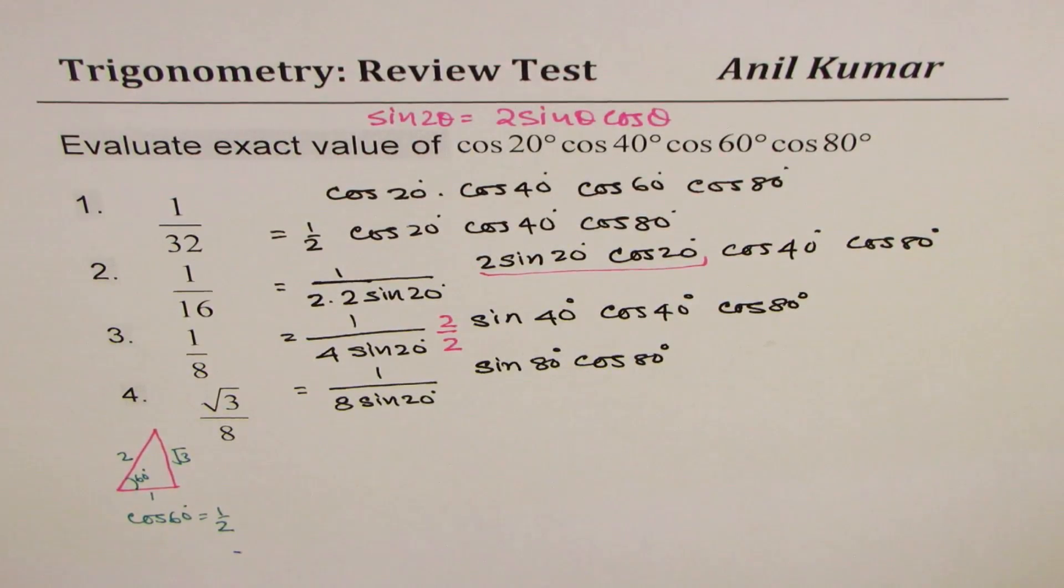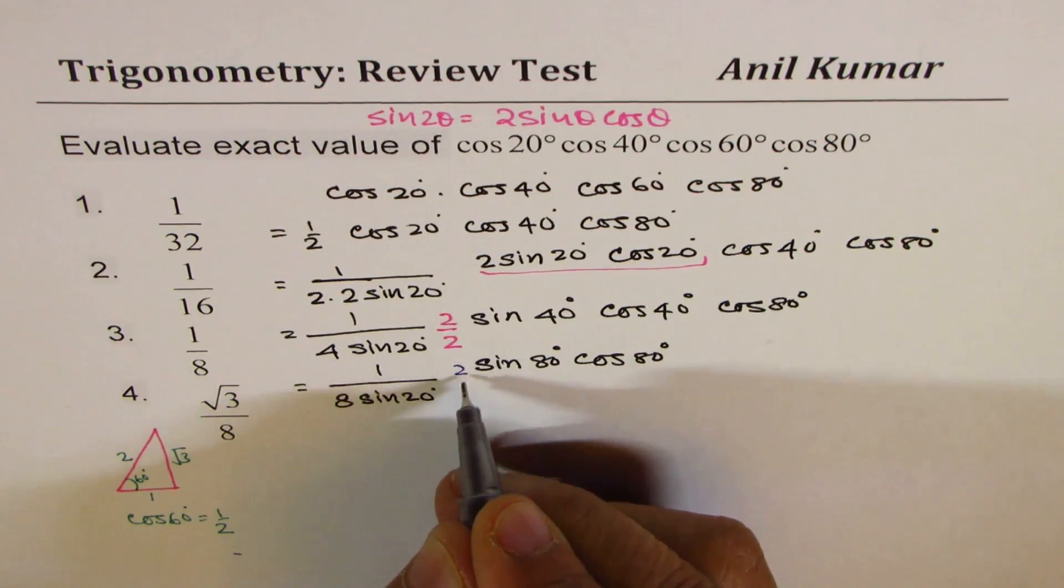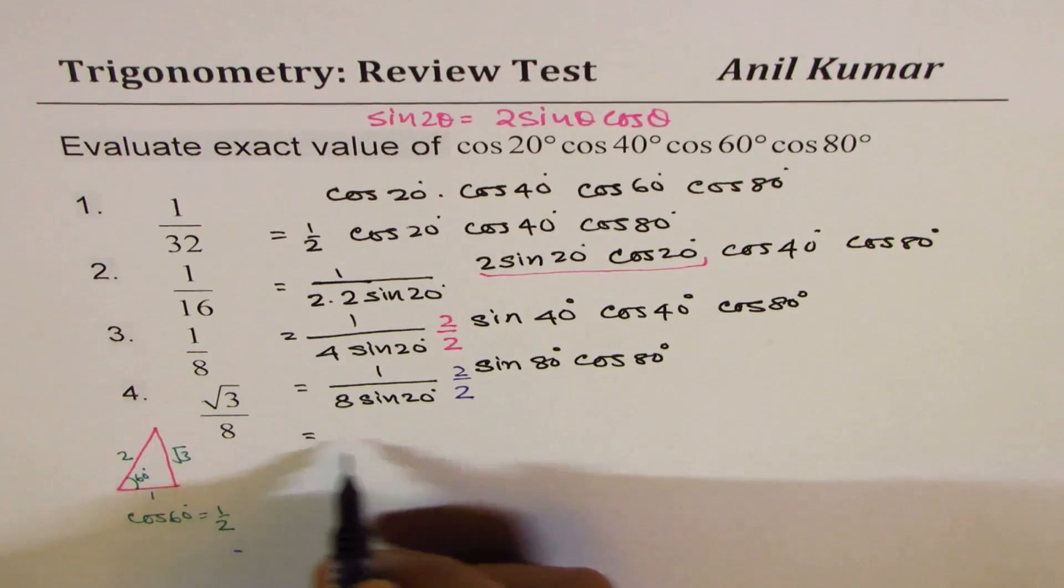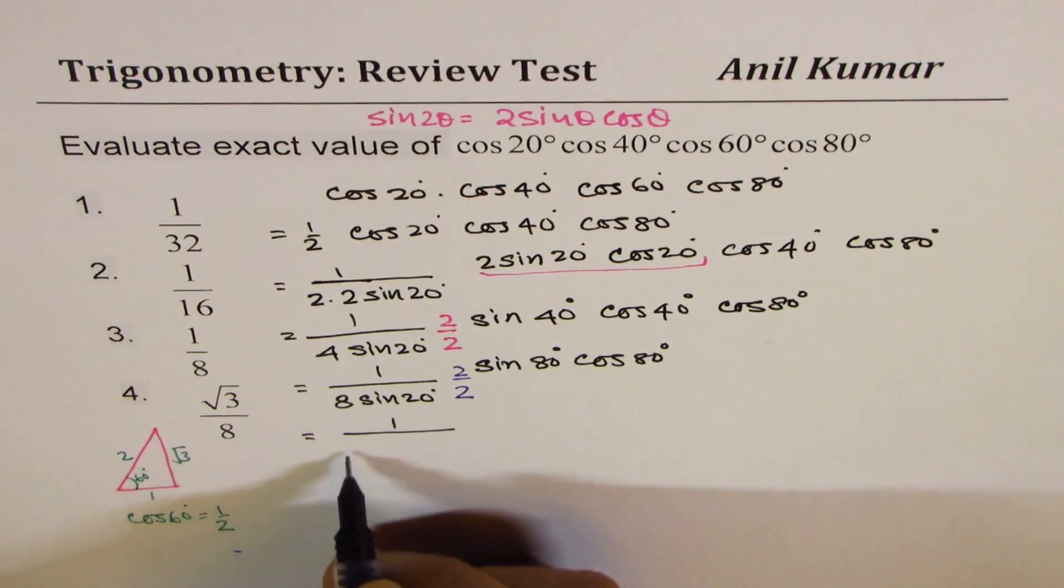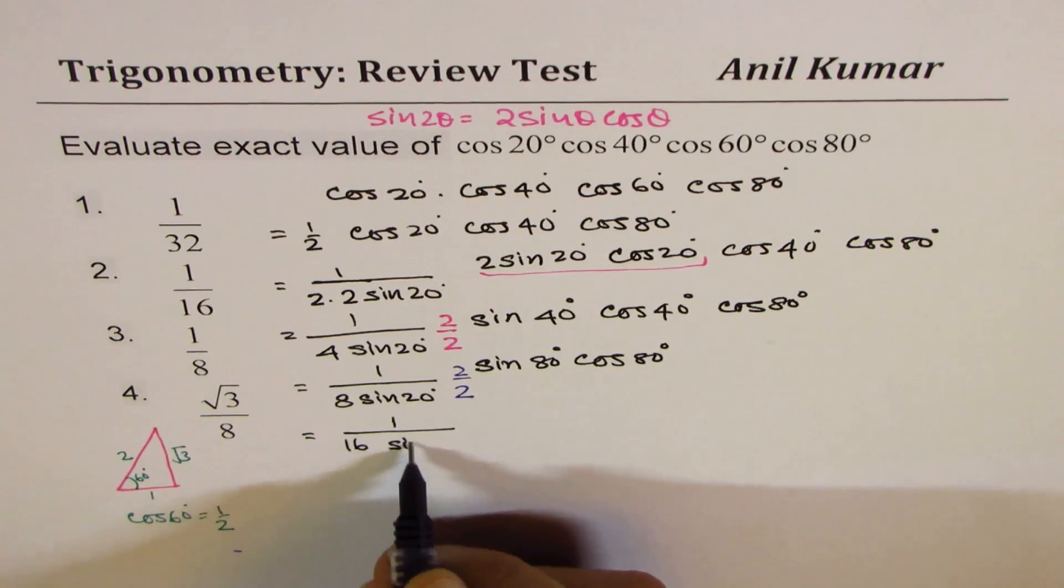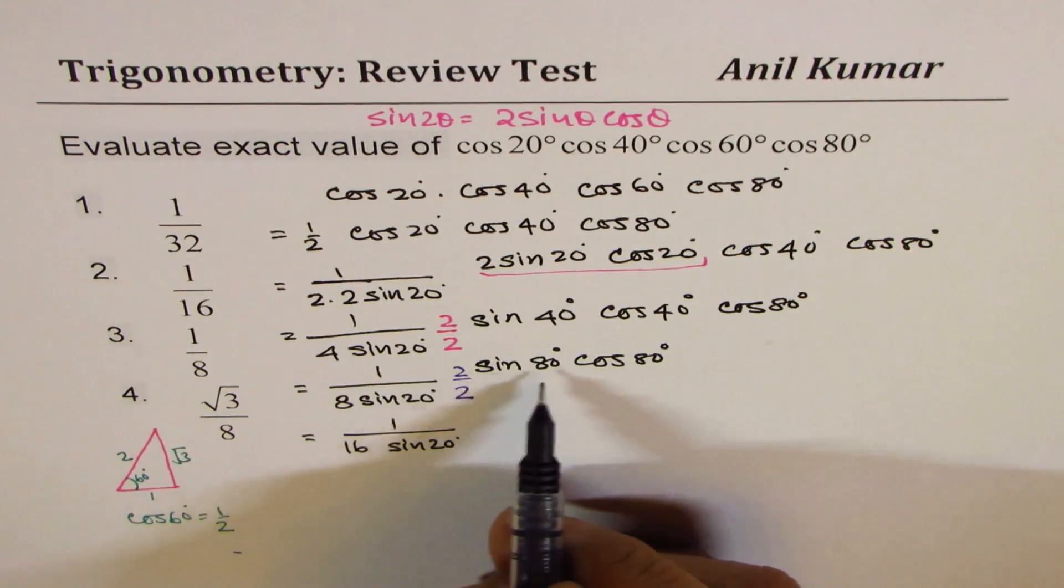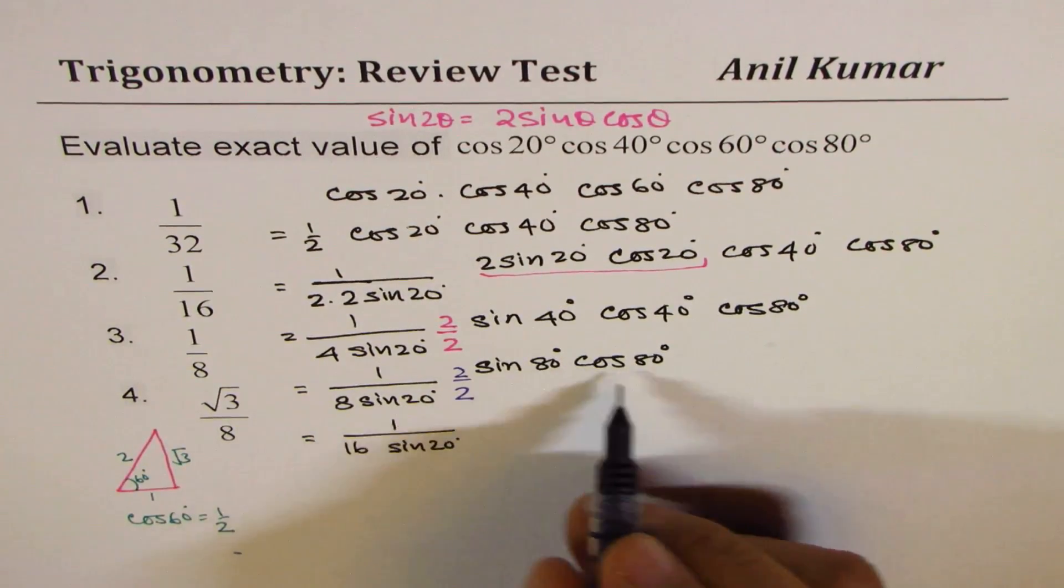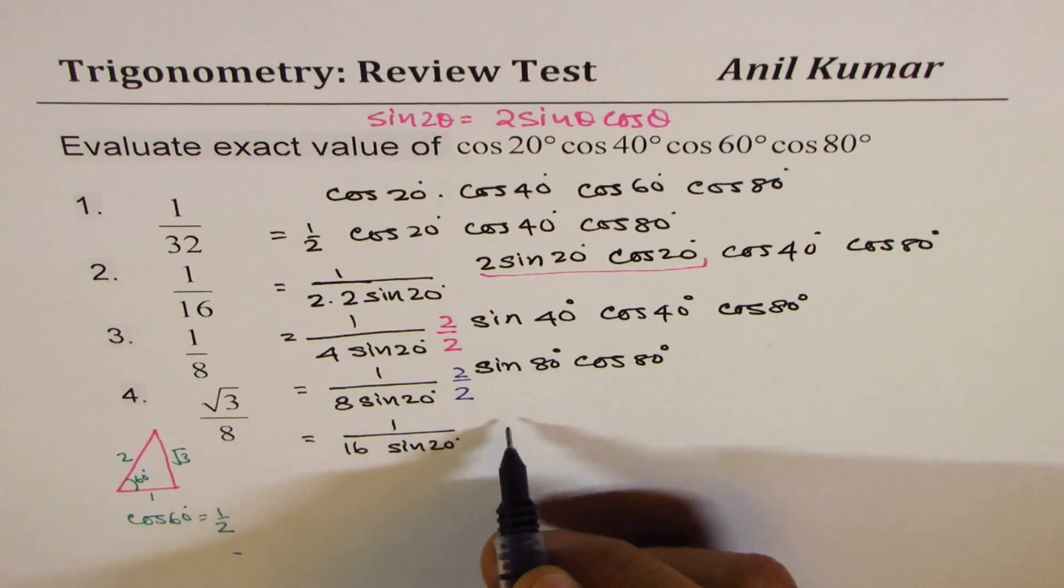Since we have cos of 80°, we can again multiply and divide by 2, and that gives us 1 over 2 times 8 is 16, sine of 20°. The numerator now becomes 2 sine 80° cos 80°, which is sine of 160°.